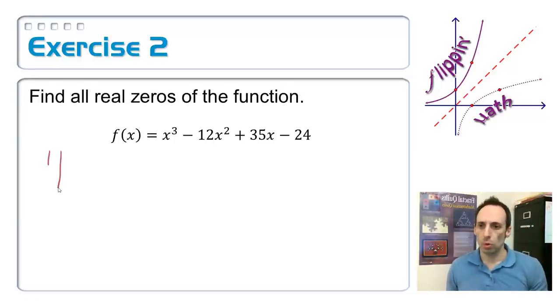Across the top, I've got 1, negative 12, 35, negative 24. And now I'm going to do my synthetic division on this.